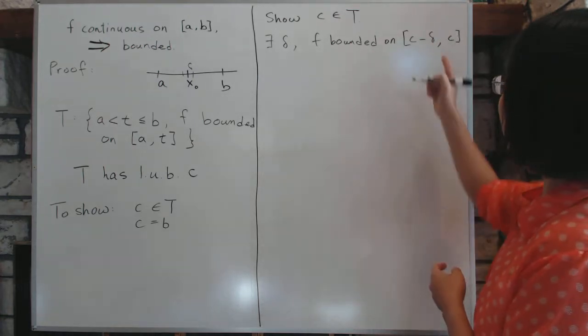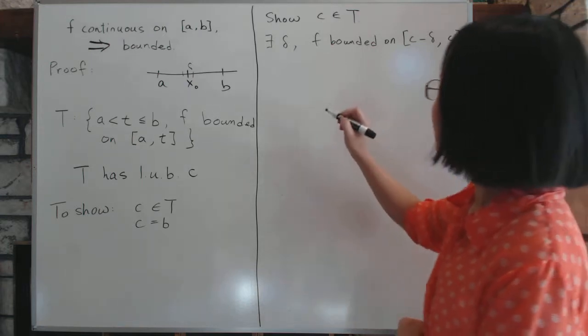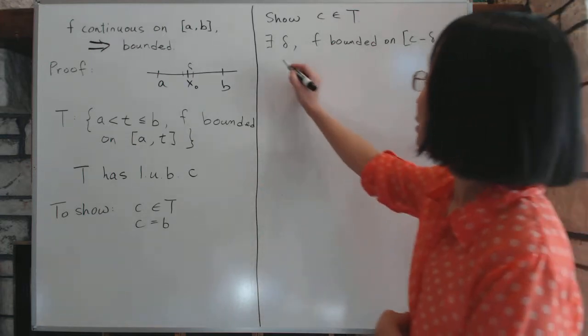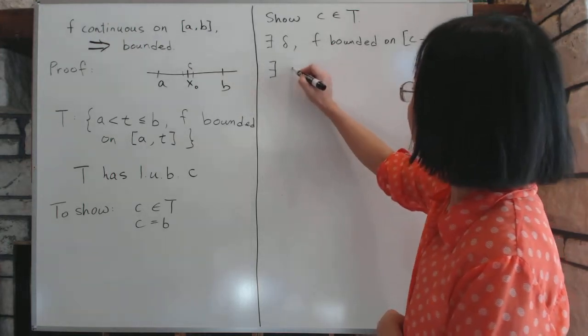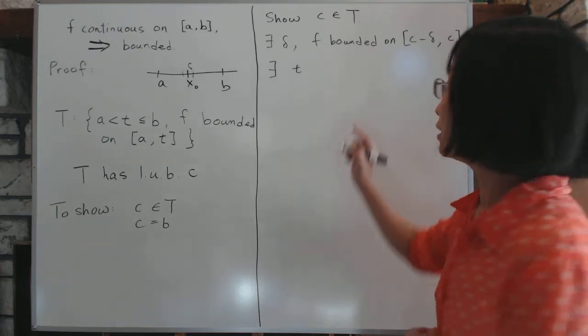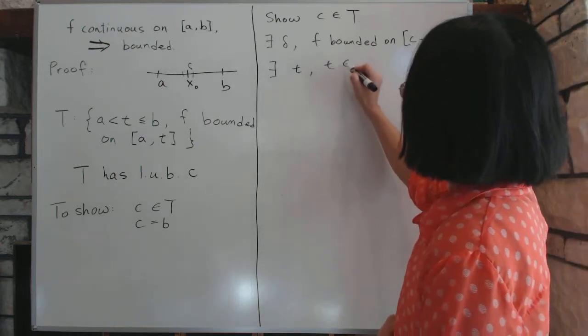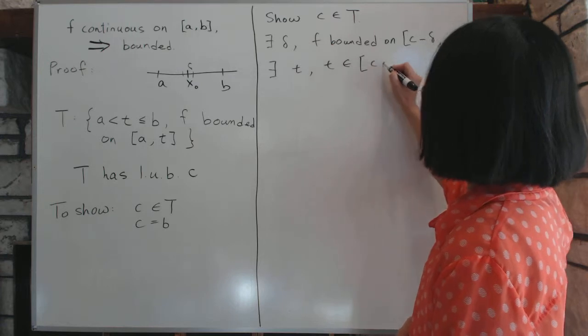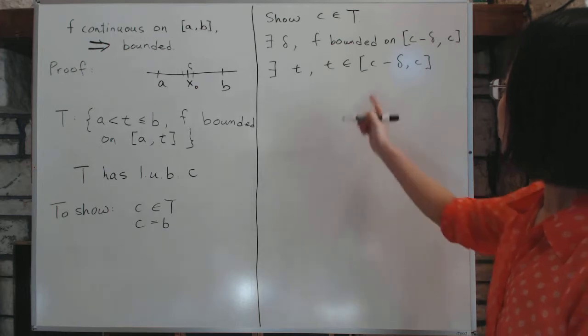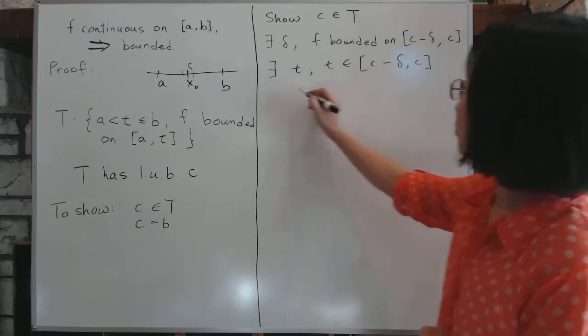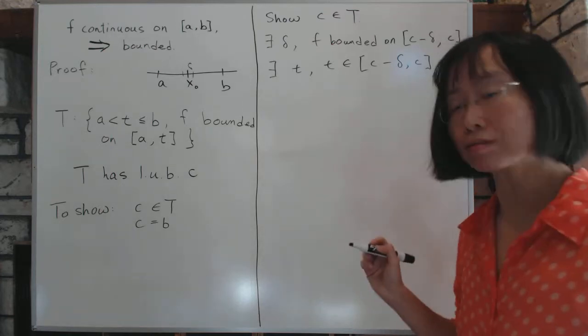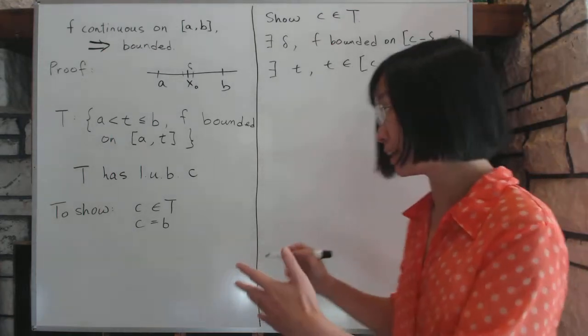And then you consider the fact that since C is the least upper bound, there exists a T that's very, very close to C, as close as you want. There exists a T where T belongs to the interval. So, in fact, T might even equal to C, there's nothing that says T can't be equal to C. It doesn't have to just approach it and not get there. You can actually get there.